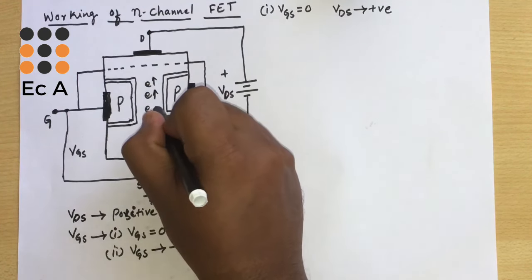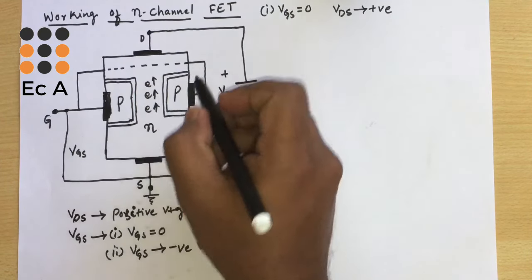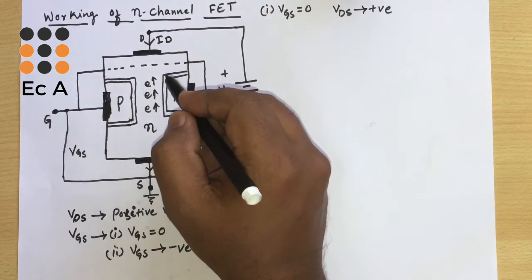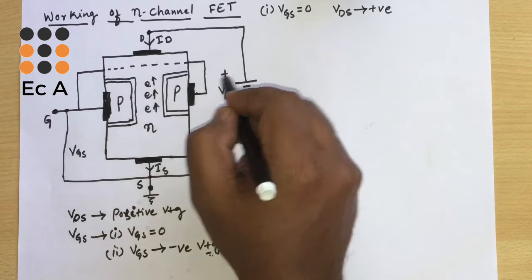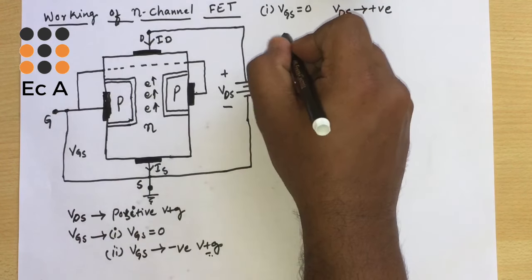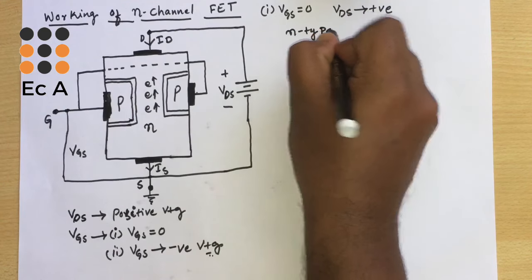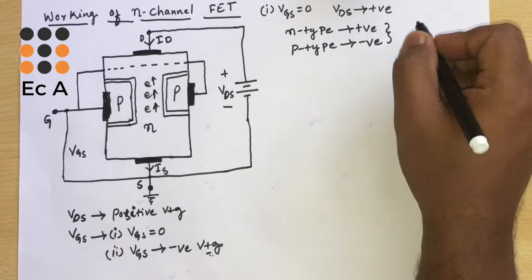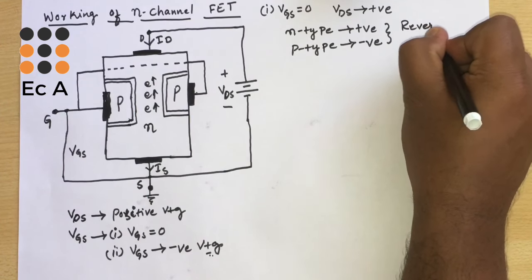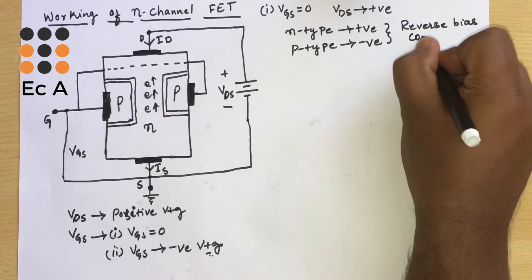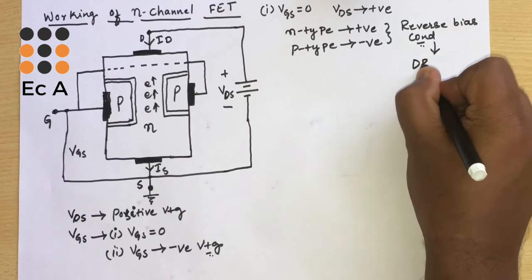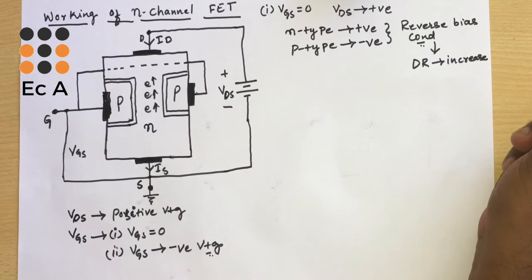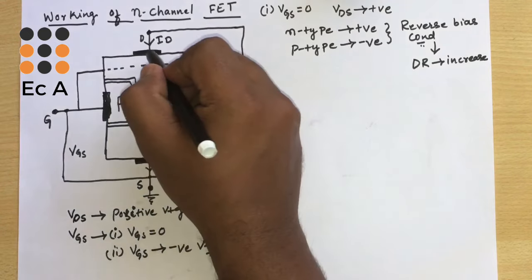Since drain is connected to the positive terminal, the electrons present in the N-channel will move towards the drain, constituting the drain current and source current. The N-type material is connected to the positive terminal and the P-type is connected to the negative terminal — this is the reverse bias condition. In reverse bias, the depletion region will increase.